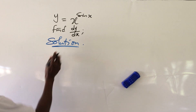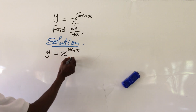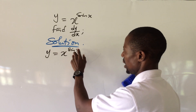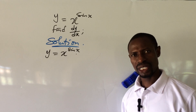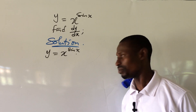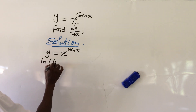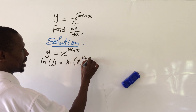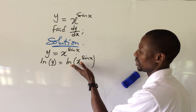We pull down the question which reads: y equals x to the power of sine x. How do we differentiate this function? It's very easy. The number one thing we do here is to handle this power. To eliminate this power, we take the natural log of both sides of the equation. So we're going to have: ln(y) equals ln(x to the power of sine x).